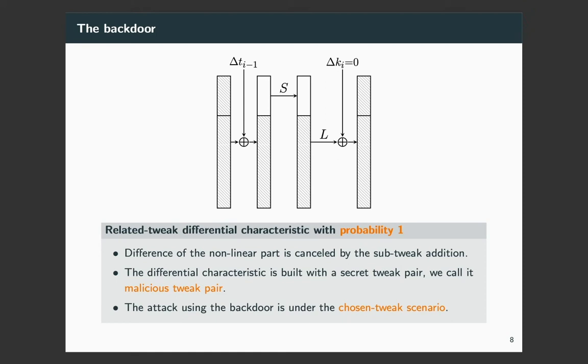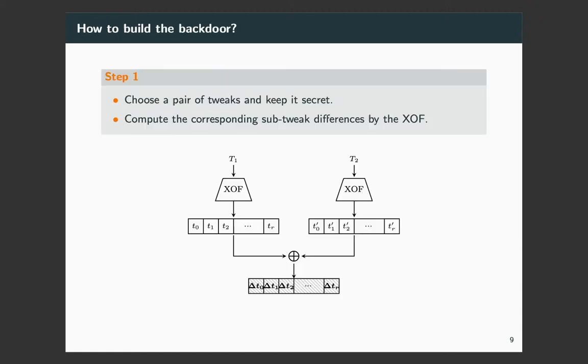However, this differential characteristic cannot be used by any external entity, because it can only be triggered by a certain tweak pair. We call it the malicious tweak pair. And it also should be kept secret by the cipher designer. Accordingly, the attack using the backdoor is under the chosen tweak scenario.